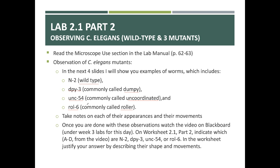Then go to Blackboard, where I'll have a folder with four different videos. One shows wild type, one shows DPY3, one shows uncoordinated, and one shows Roll6. However, you won't know which is which — they'll just be labeled A, B, C, and D. It will be your job to tell me which of those four is wild type, which is DPY3, which is UNC54, and which is Roll6.